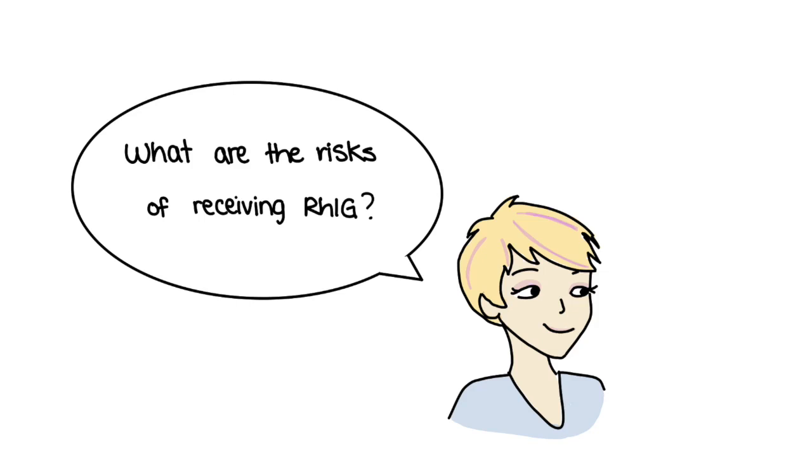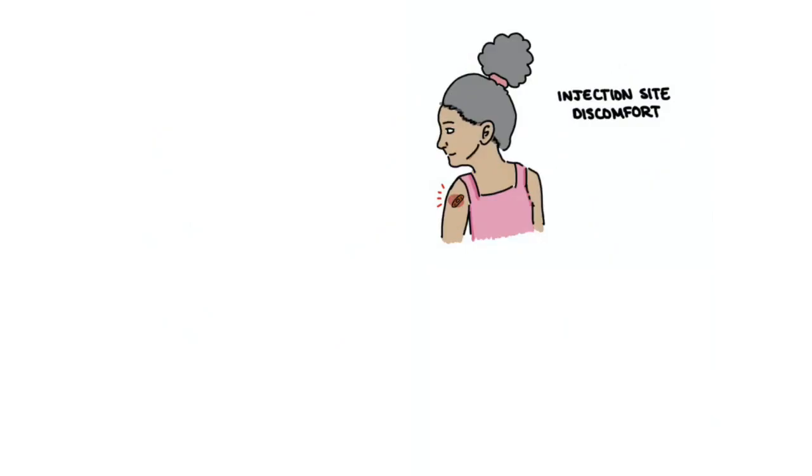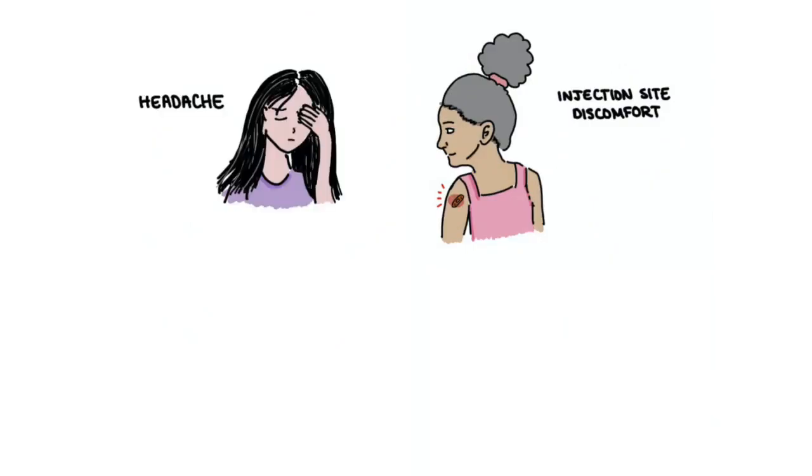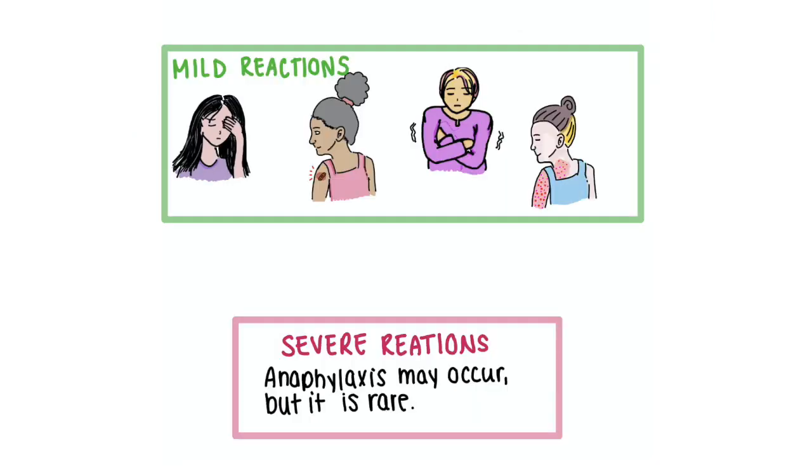What are the risks of receiving RHIG? Side effects from RHIG are rare and if they do occur, they are usually mild. For example, patients may experience swelling near the injection site, headaches or chills. Some people may experience an allergic reaction in the form of a rash. A severe allergic reaction, known as anaphylaxis, can also occur, but this is rare.